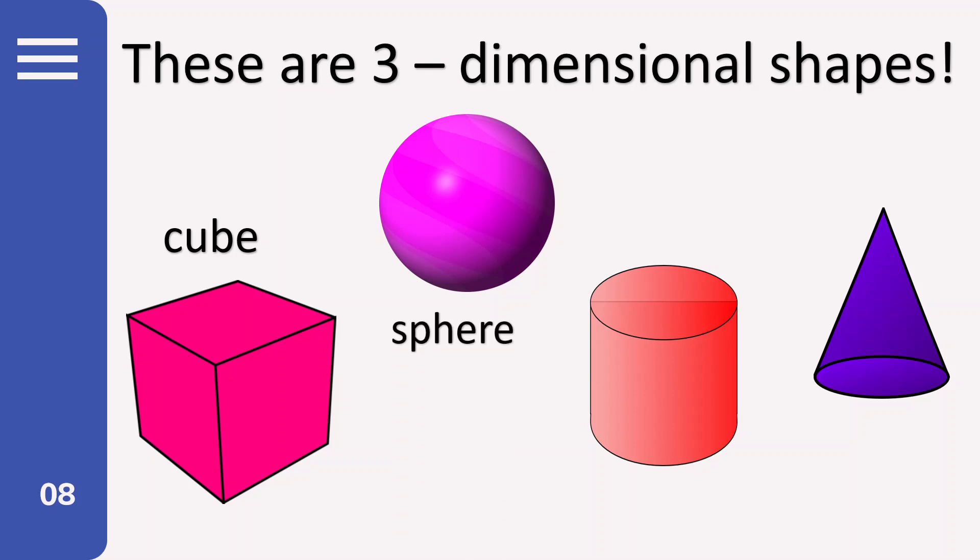Next, this is a sphere. It looks like a globe. It looks like a circle, but the shape of that one is not a circle, but we call it a sphere.